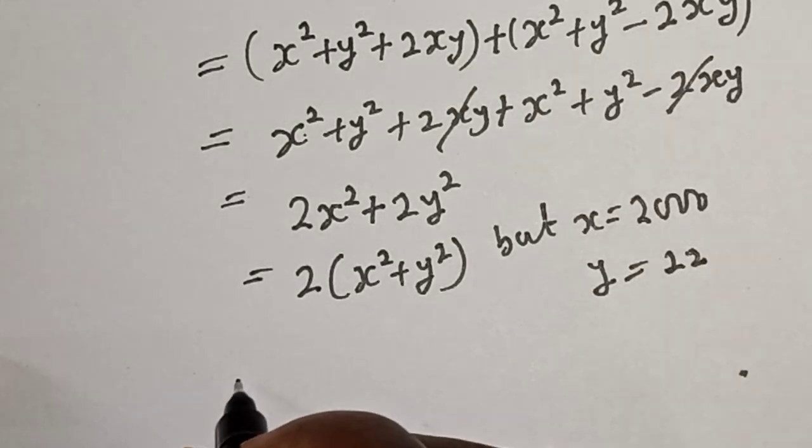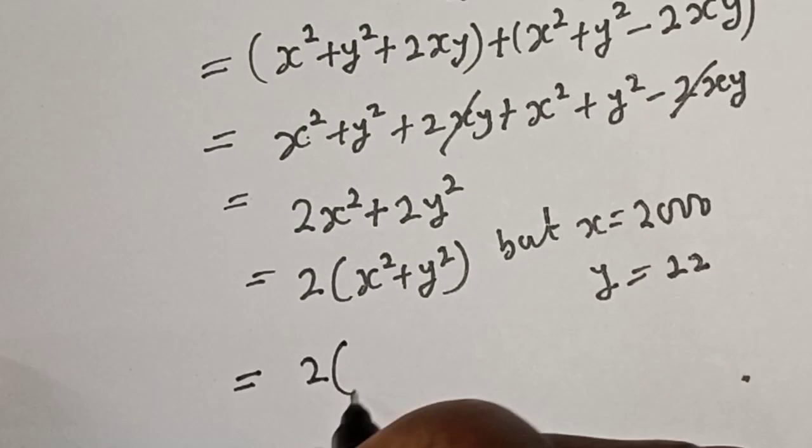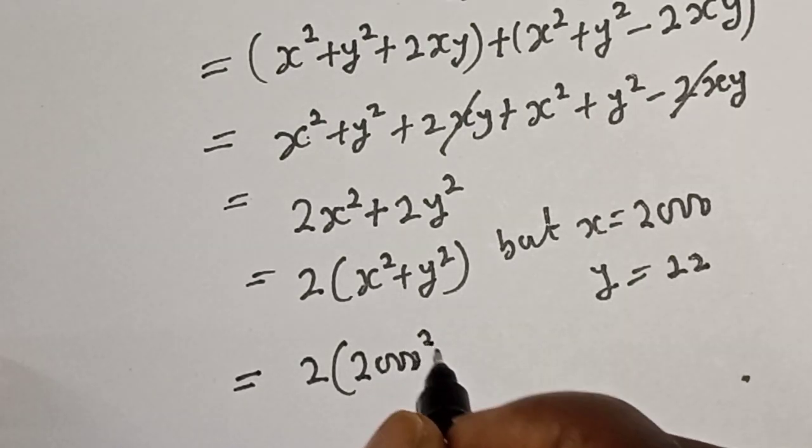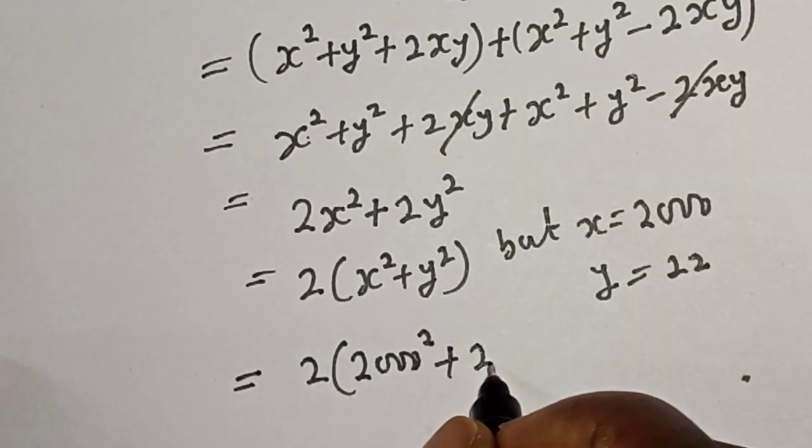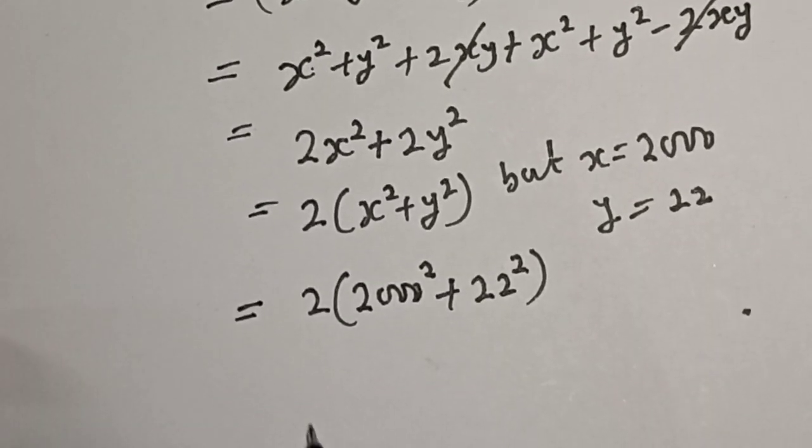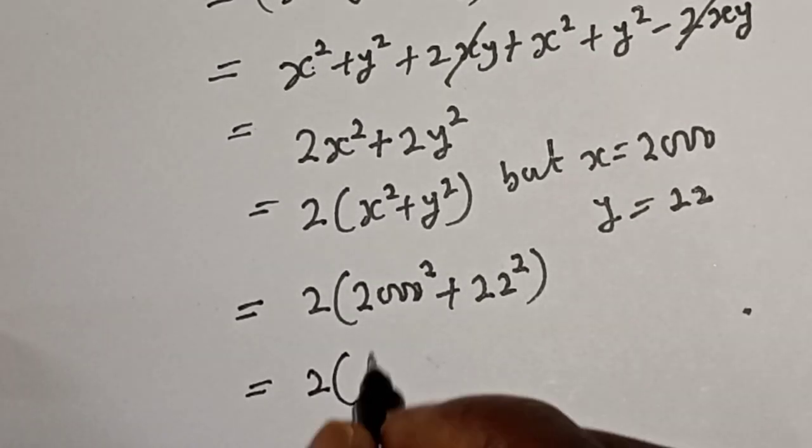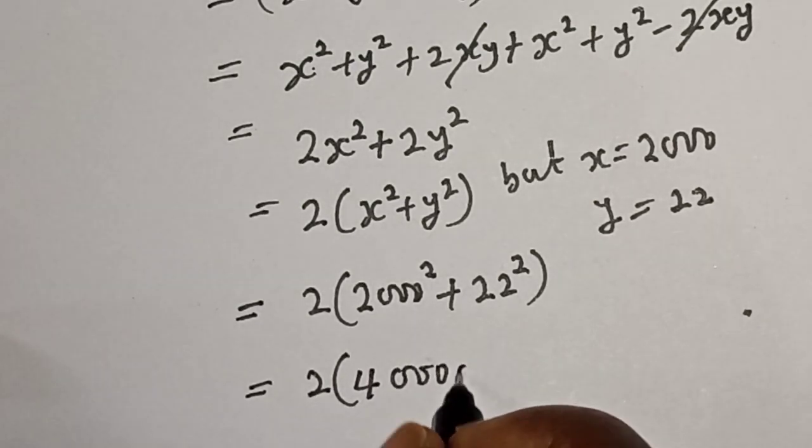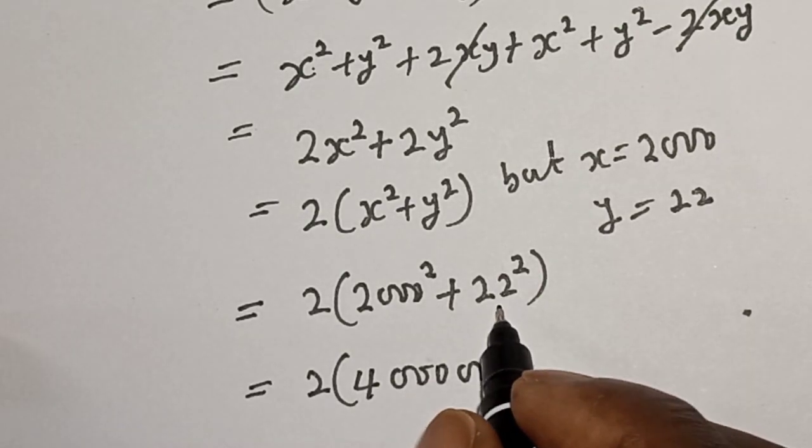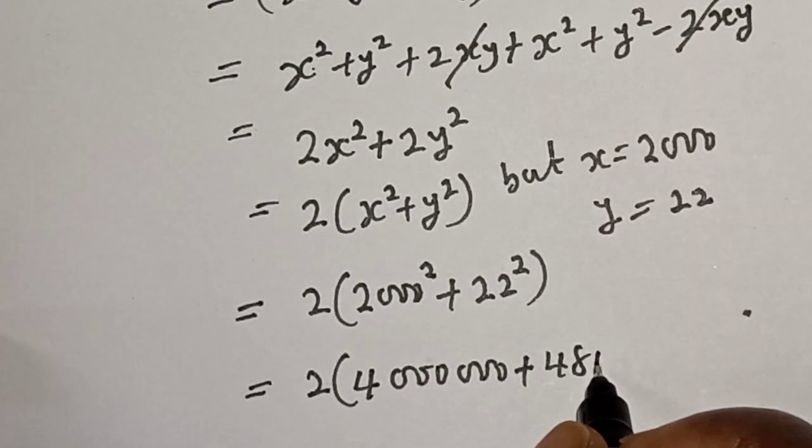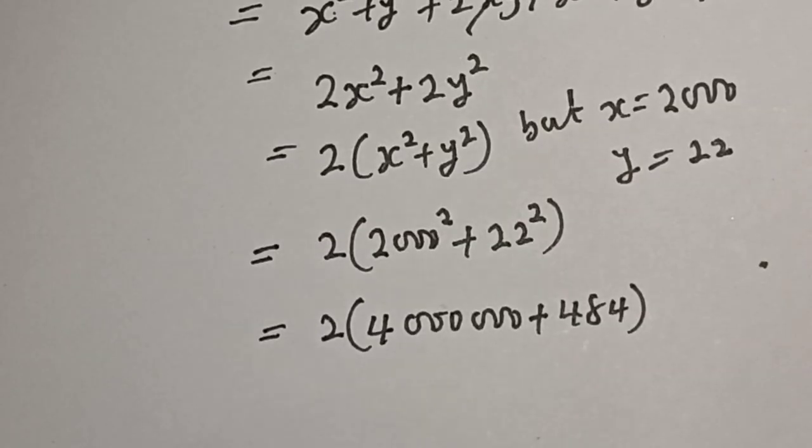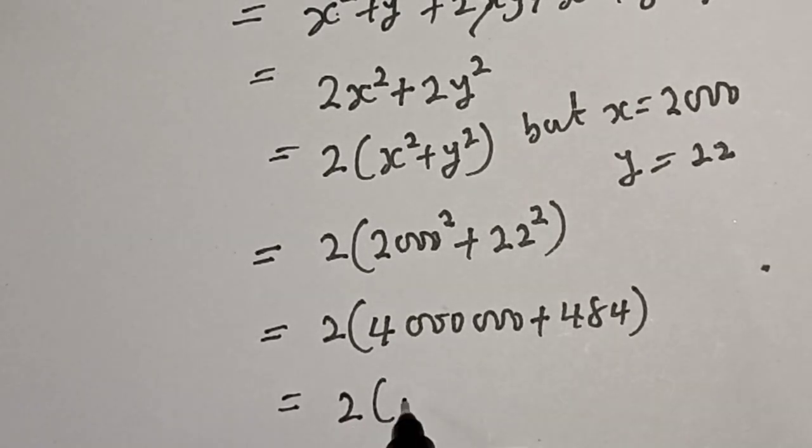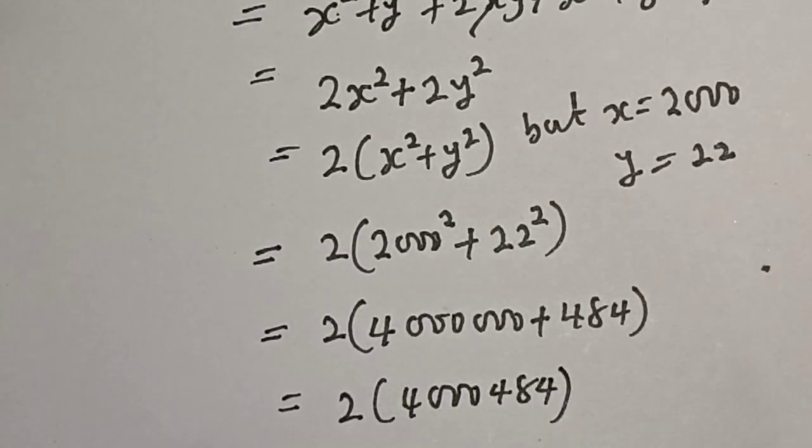Now let's substitute. This is equal to 2 bracket 2000 square plus 22 square. Then this is equal to 2 multiply by 2000 square is 4 million plus 22 square that is 484. And this is 2 bracket, let's add this plus this, we have 4,000,484.